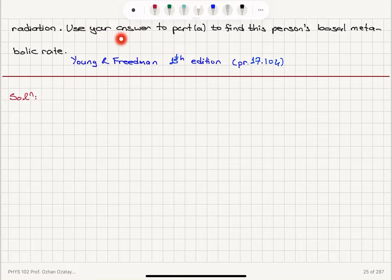Use your answer to Part A to find this person's basal metabolic rate. So, we are talking about heat loss by thermal radiation which is given by Stefan's law. So, the net power radiated,